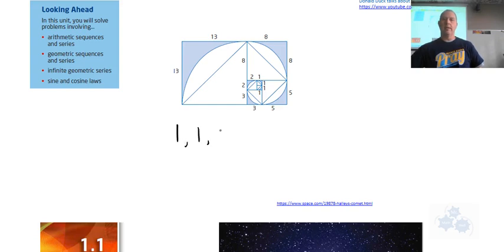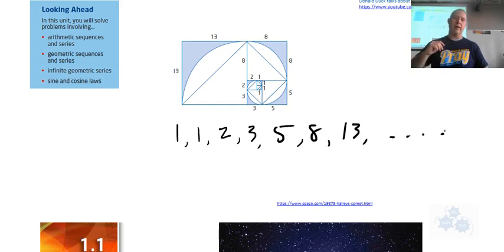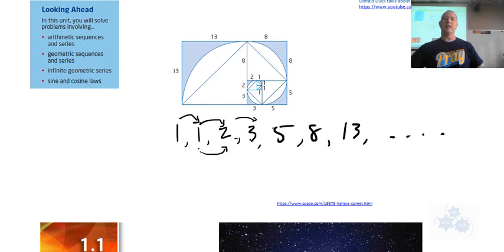A series is the sum of the items in a sequence. There's a famous series called the Fibonacci series, and that's the sum of all of these numbers. So where does this come from? If you look at these numbers and these rectangles that are formed here, the sequence is actually 1, 1, 2, 3, 5, 8, 13, and so on.